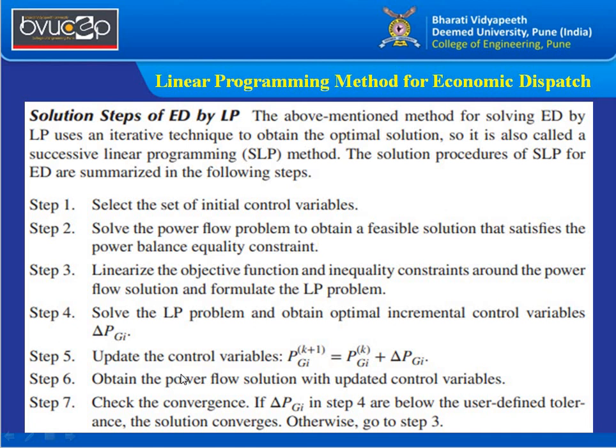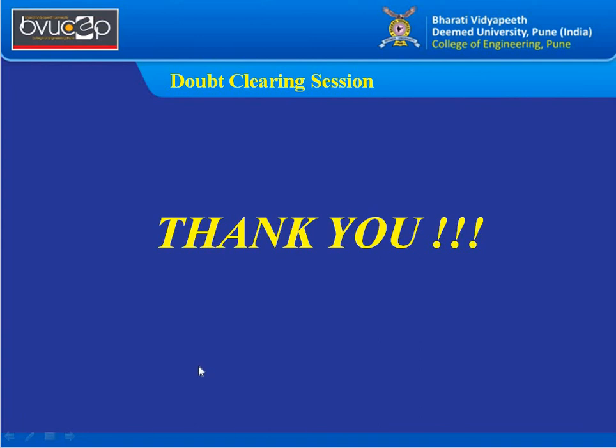That concludes this session. We have covered all topics related to optimal power flow analysis: OPF solution methods, loss coefficient sensitivity factors, economic dispatch, and the linear programming method — completing unit number five. In the next lecture, we will start with power system security and contingency analysis, which is the last part of unit number six. Thank you.